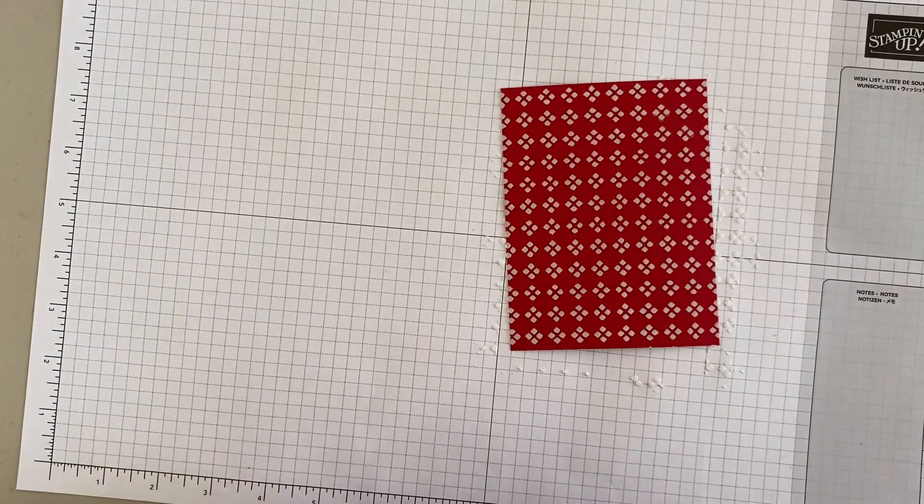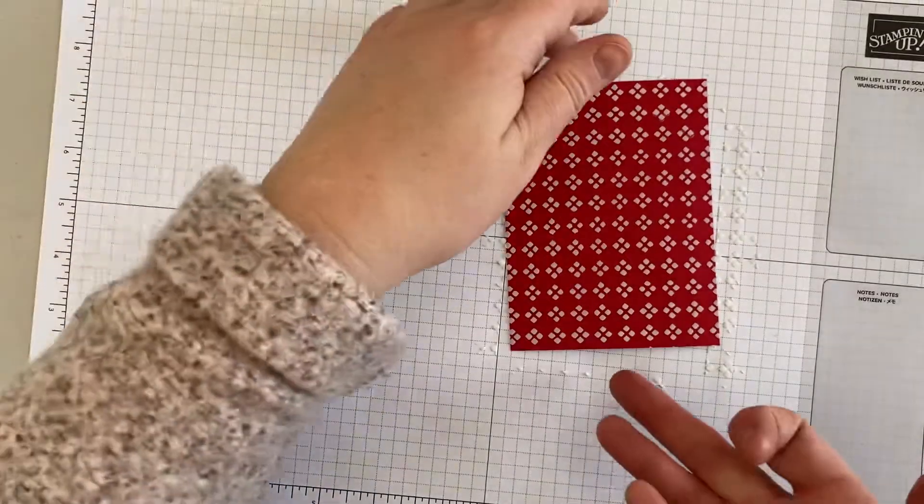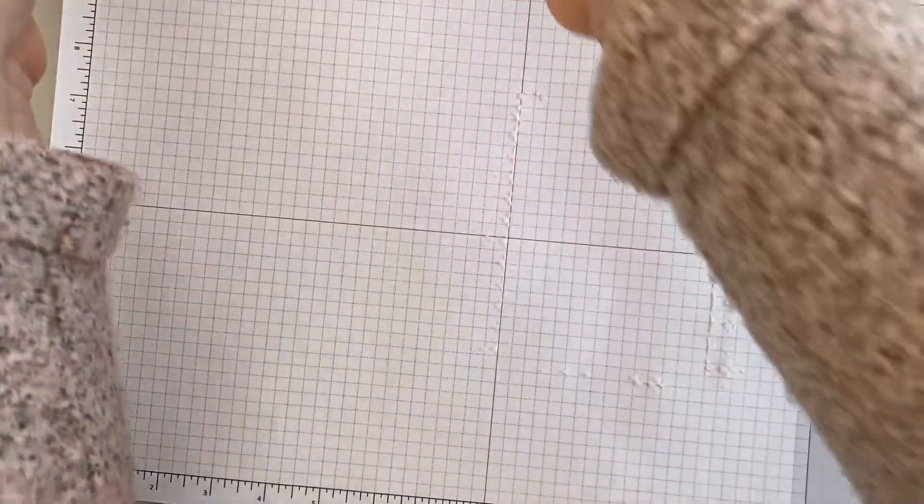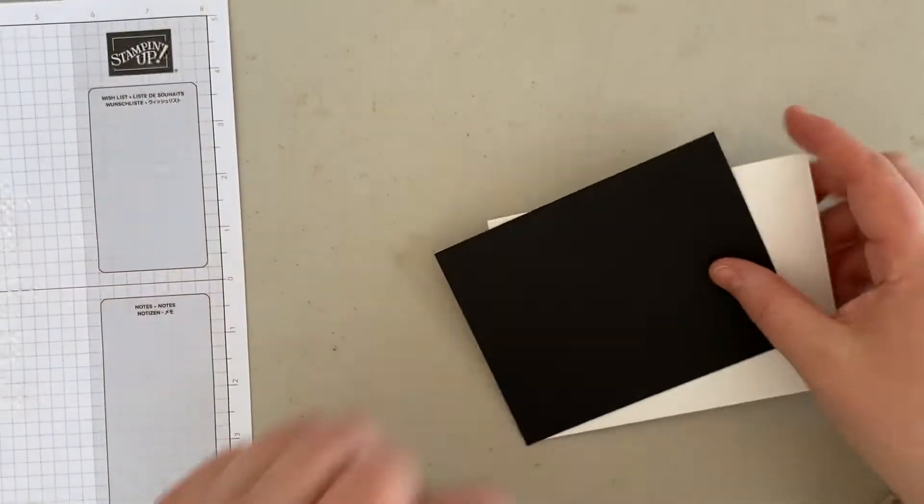I'm just going to seal my bag. So that will just take a minute to dry on there. This is the part where you would set that aside and then start assembling the rest of your card.